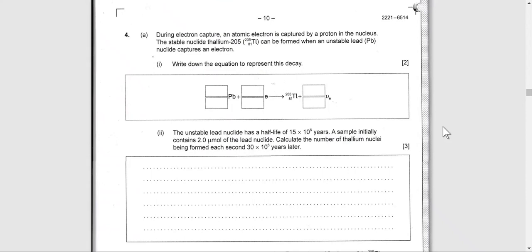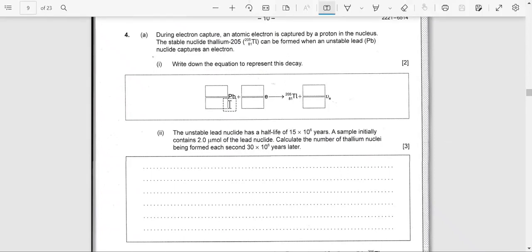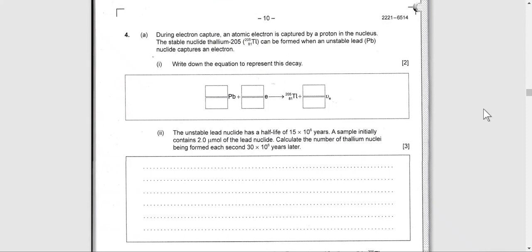Write the equation to represent the decay. We have lead-206, and it will be turning into thallium-81 with mass number 205, since the mass number is 205.